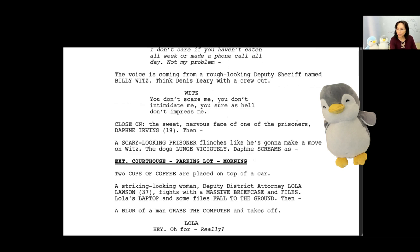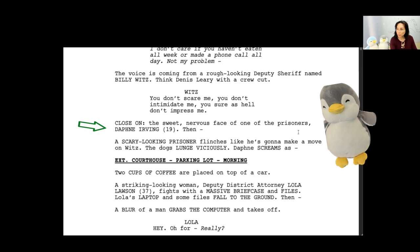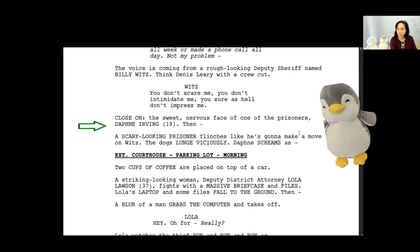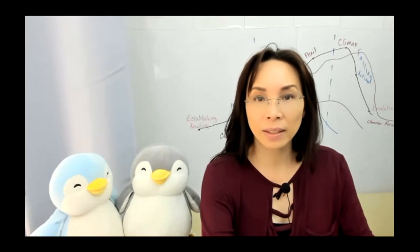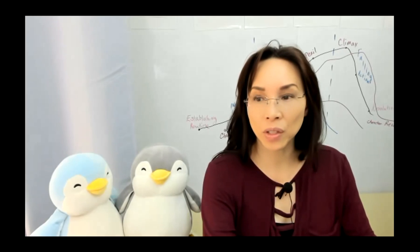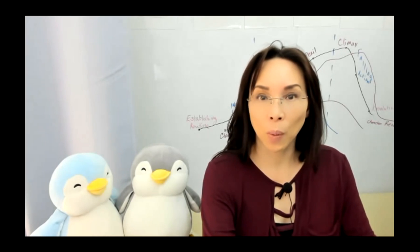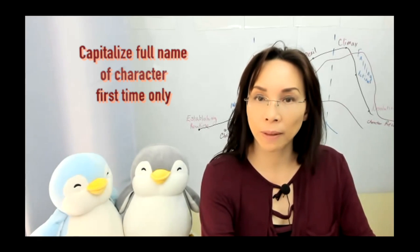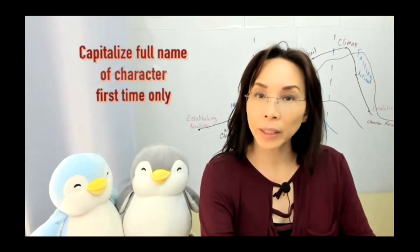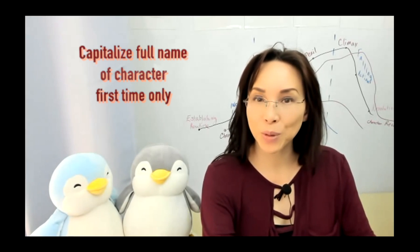And then next up, I have close on the sweet nervous face of one of the prisoners, Daphne Irving, 19. Okay. Again, this tells me I have a character that is named. It tells the casting director, I have to cast an actress named Daphne, who will be named Daphne. And she's about 19 years old, right? So the use of capital letters, the use of emphasis on these areas is important to tell the production crew what they're doing. And by the way, you capitalize a character's name the first time that they appear on the page of the screenplay and not again. All the other times that that character's name appears will not be capitalized.